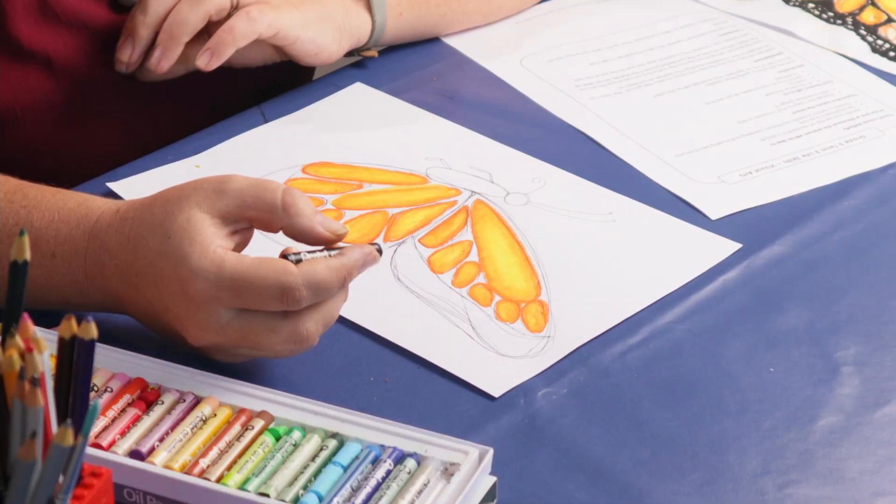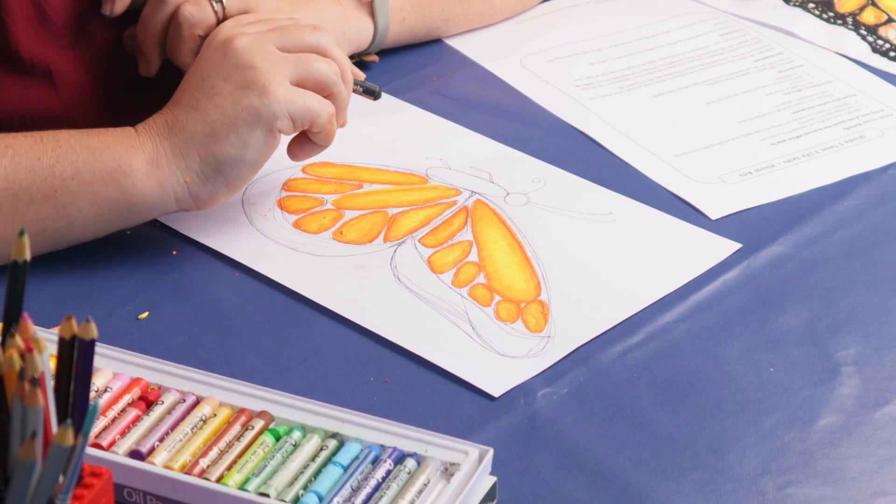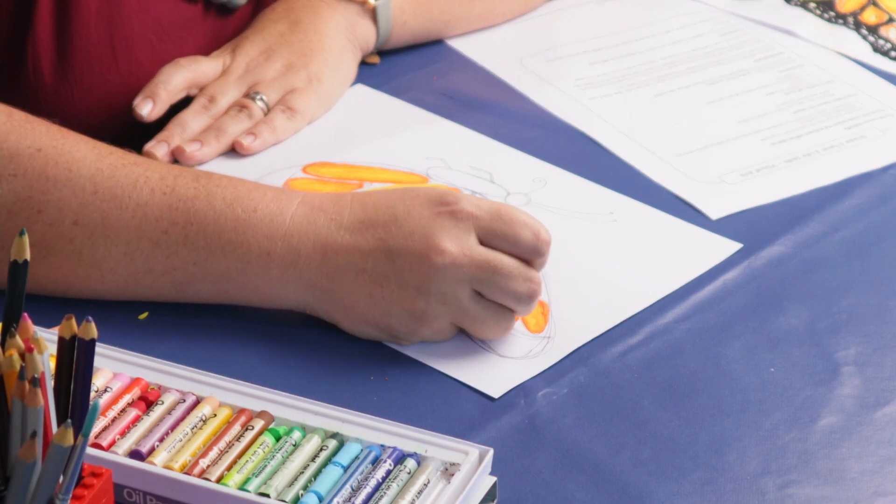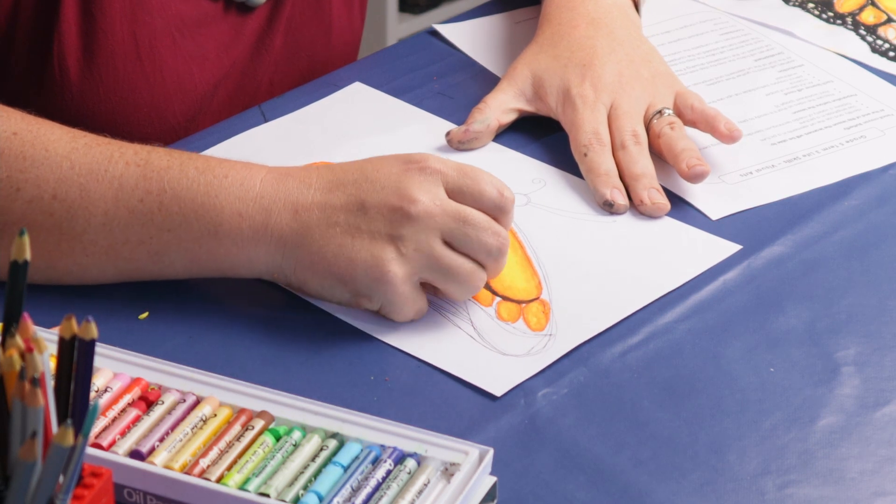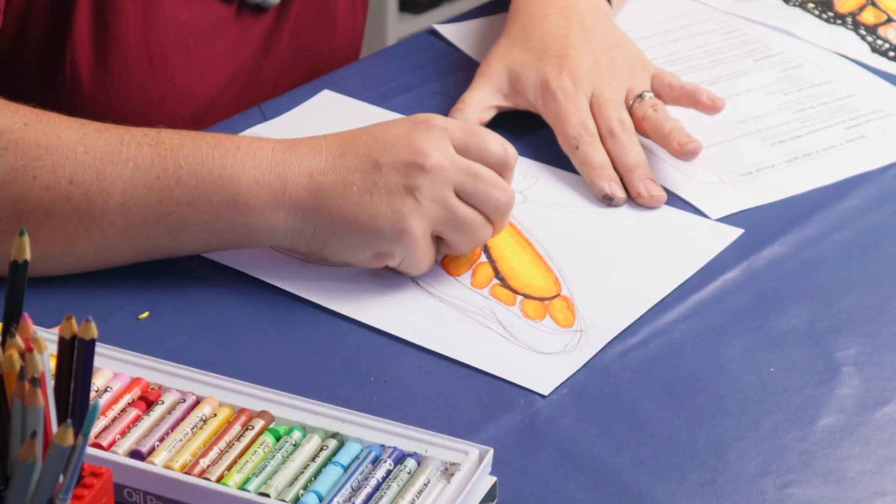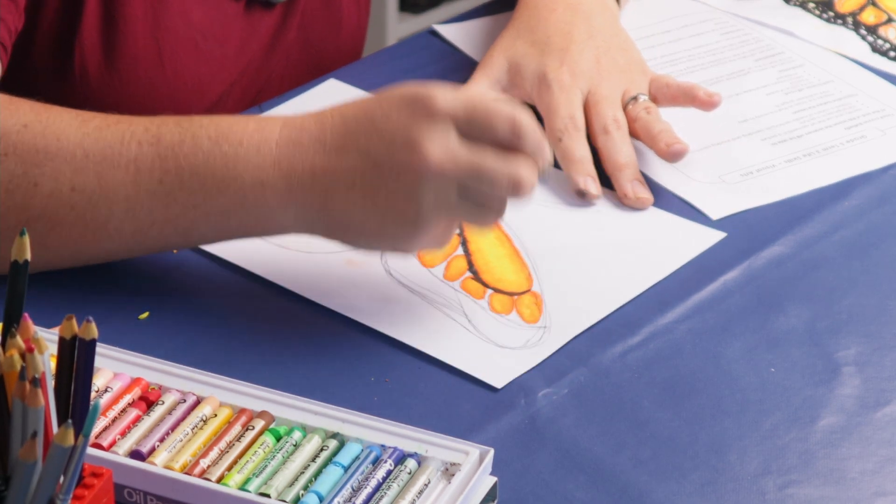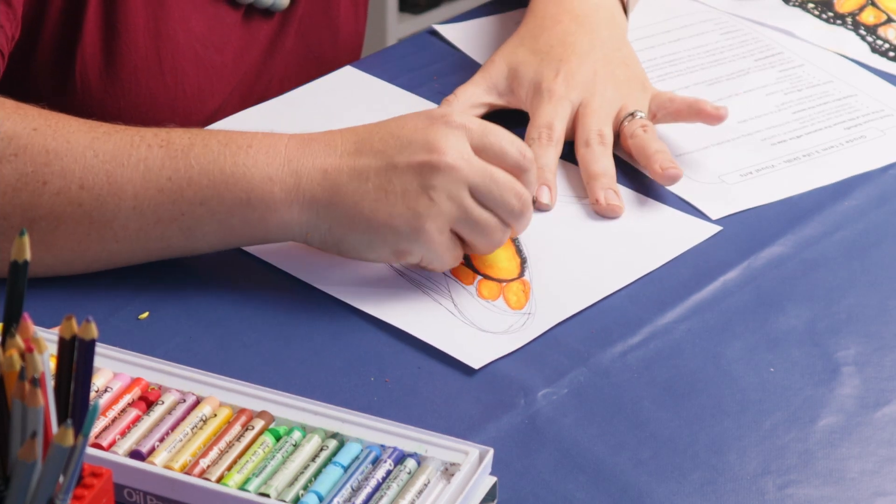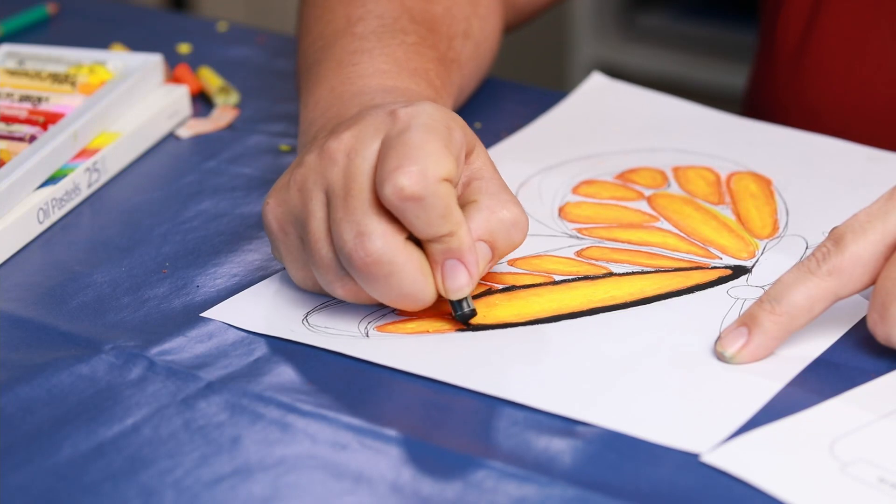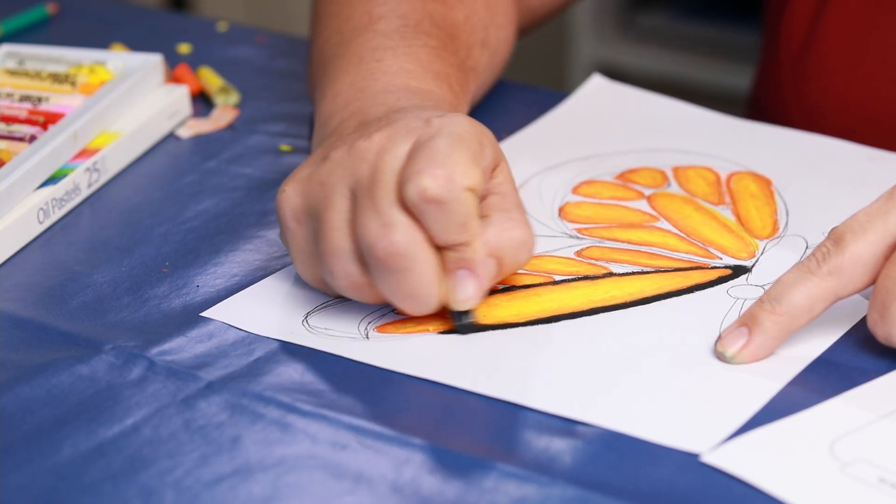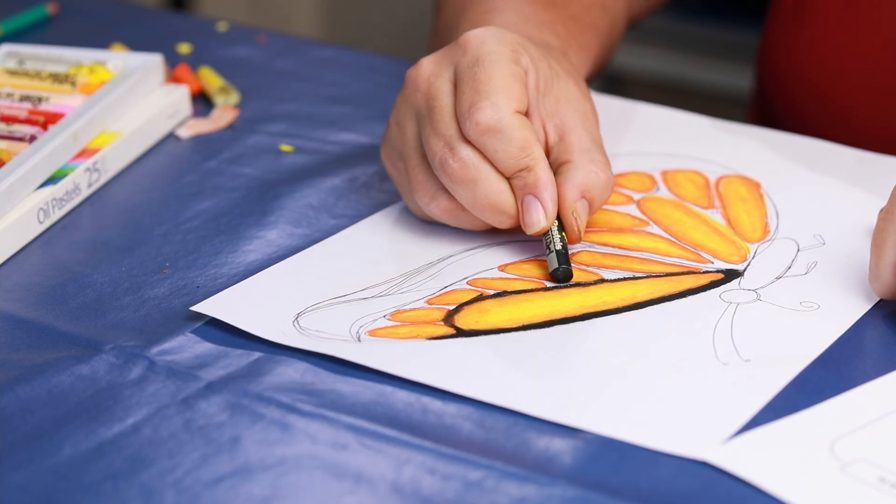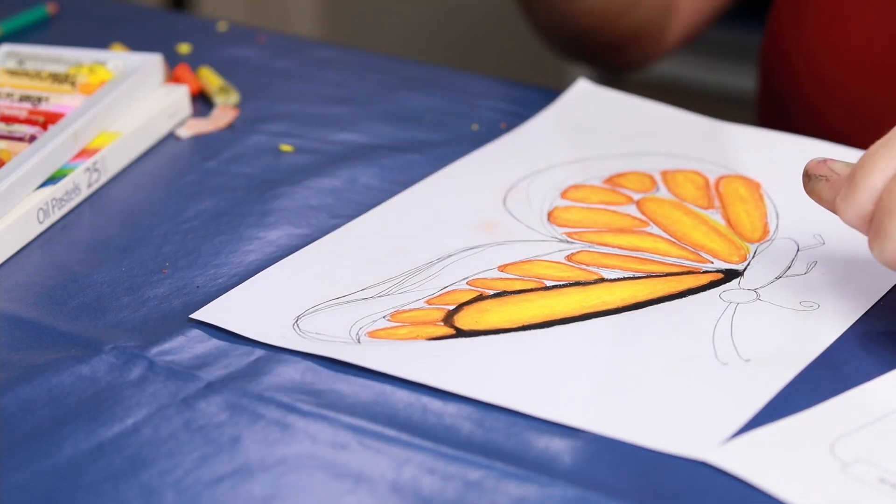Now that we've finished coloring in our ovals, we're going to start outlining them with our black pastel. So you're just going to go around the edge of each oval at first. You need to press really hard with your black pastel and get a nice contrast or difference in color. If you don't press as hard it doesn't stand out as much.